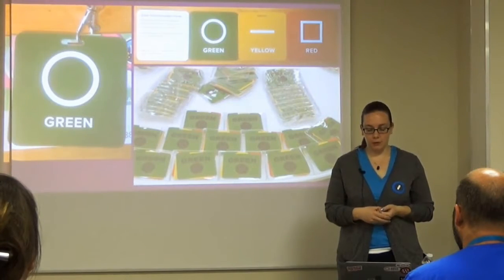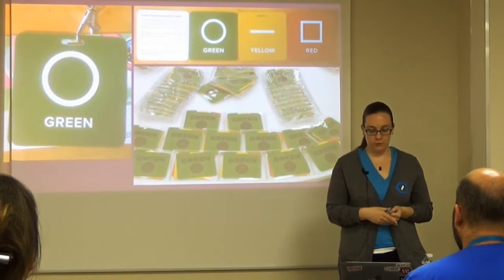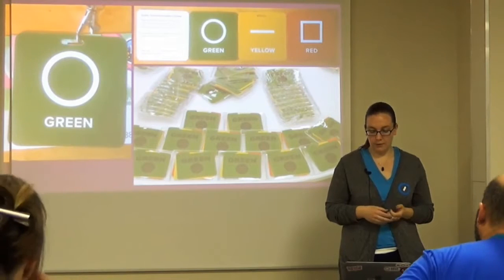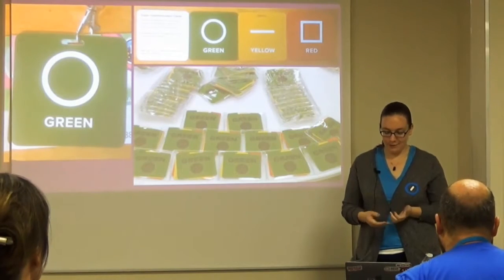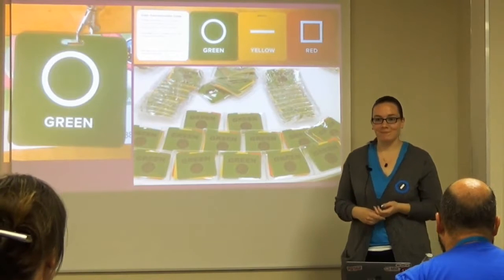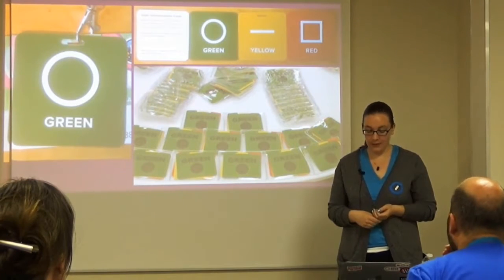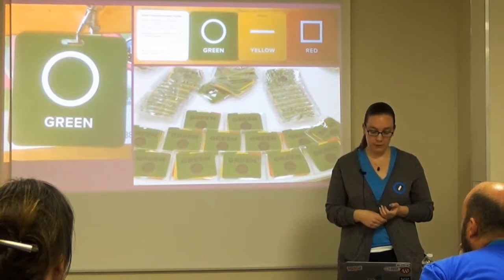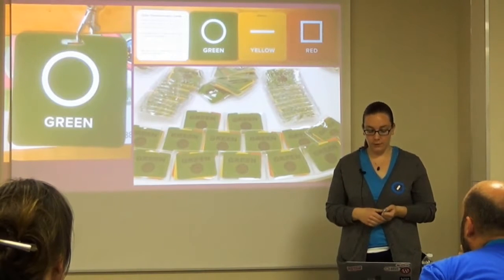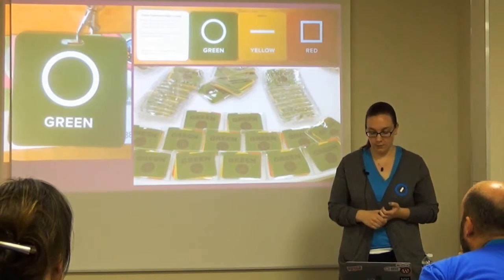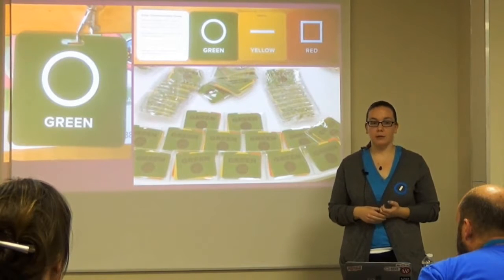Another colored badge system can be used for communication preferences. Attendees are given three color cards they can swap out throughout the conference. Green means the person is open to talking to anyone. Yellow, only for talking to people you know. Red for spectator mode — not interested or able to talk to anyone. These are useful for people with anxiety or who have trouble in social situations. They make it explicit whether someone is open to conversation, with no need to read nonverbal cues. They're designed to be changeable — if a situation gets overwhelming, a person can go from green to yellow. These work best if you explain to everyone what they mean and encourage their use.